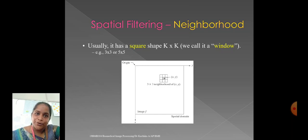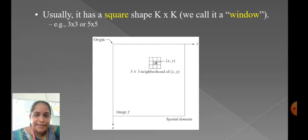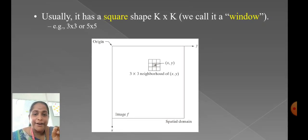In Spatial Filtering Neighborhood, usually it has a square shape, K cross K. We can call it as a window, for example, 3 cross 3 or 5 cross 5. In this example, we can have a pixel, pixel origin and also we have X, Y. This example shows you 3 cross 3 neighborhood of X, Y.